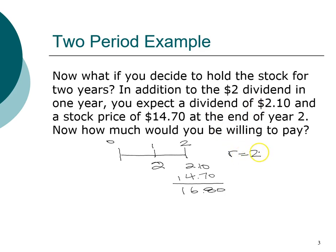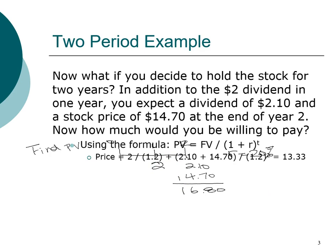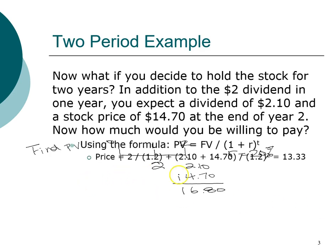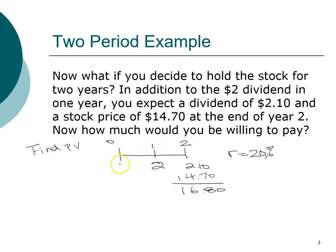To find the price we are willing to pay today, we still find the present value. This is a multi-cash-flow problem with cash flows in year one and year two. Using the financial calculator with the cash flow register, there is no cash flow in year zero, so we enter zero to reflect that. Cash flow one in year one is two dollars.